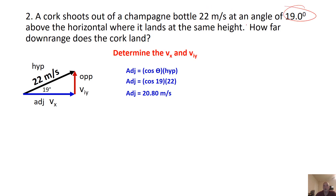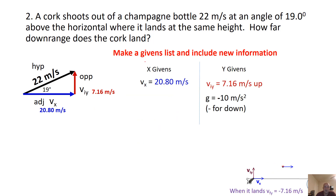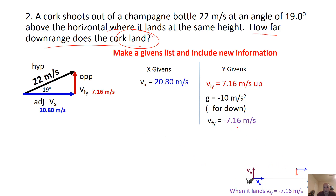Whatever speed at whatever angle is always going to be the hypotenuse, so make sure when you're drawing these triangles that's how it works. We get 20.80 for VX. Then we find the opposite side — the VIY. Opposite over hypotenuse leads to sine, so sine of 19 times 22 gives us 7.16. We populate our givens list: VX is 20.8, VIY is 7.16, gravity is negative 10. Since the cork lands at the same level, VFY will be negative 7.16 — that covers the entire flight.